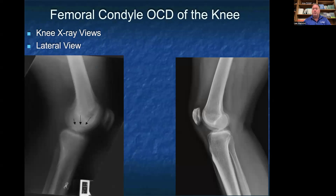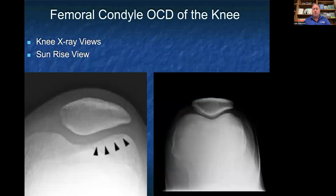On the sunrise view — so called because the patella is the sun coming up between the two mountain peaks of the femoral condyles — you have a normal sunrise view on the right, and on the left you can see this translucent appearance where all four black arrows are consistent with a femoral condyle OCD.